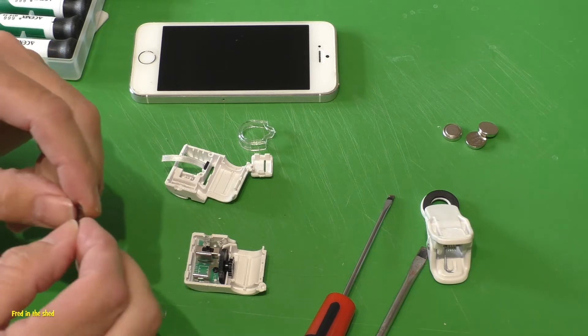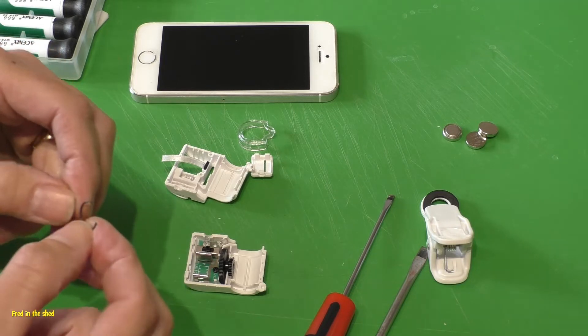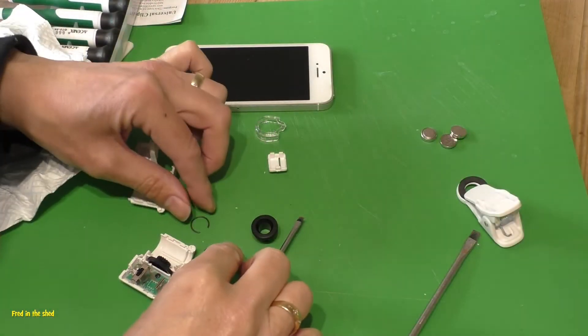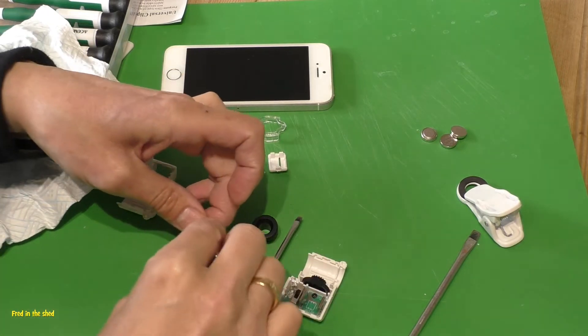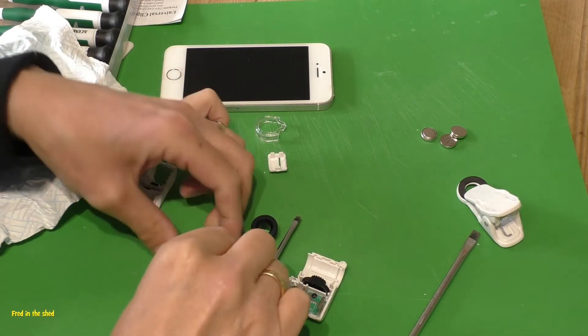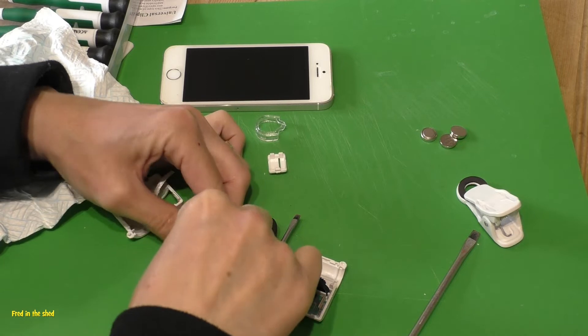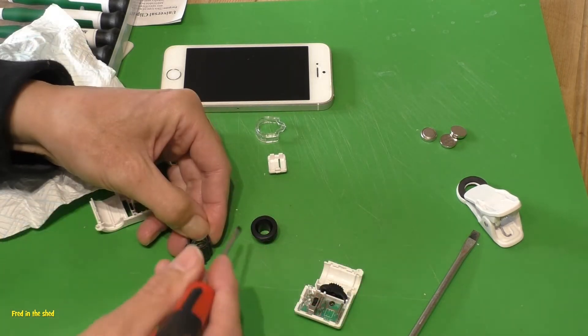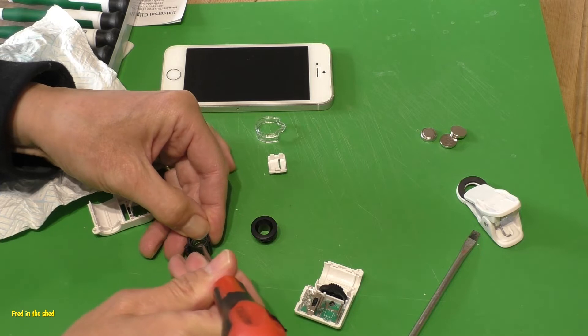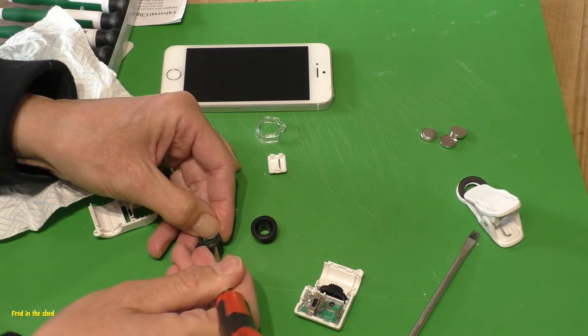It was obviously holding the lens element in the focusing tube. I'm guessing that being shipped over from China, it got dropped and knocked about, and it had sort of fallen out. I tried to put it back in, but there's nothing really to hold it in - once you pushed it into the tube, it just kind of fell out again.